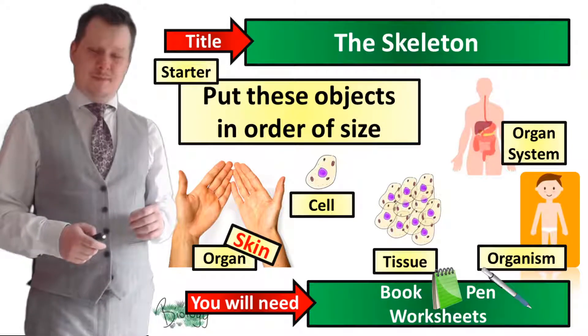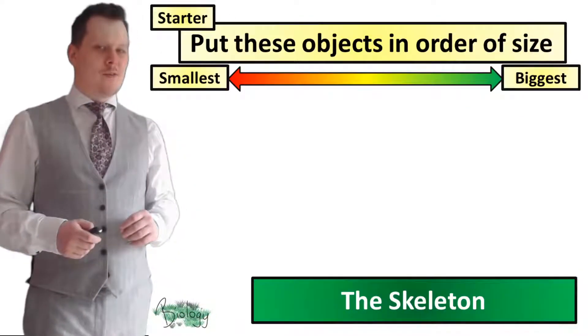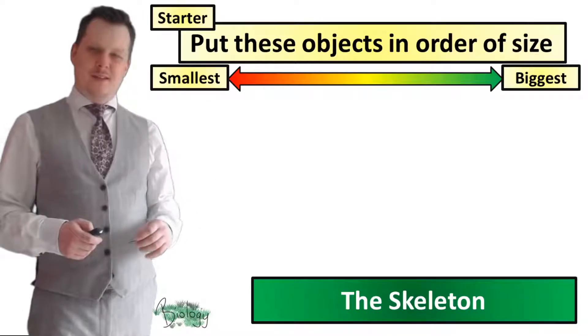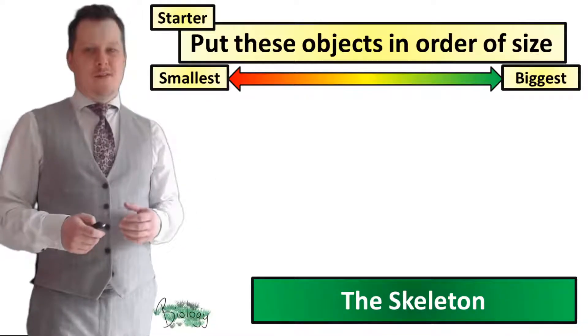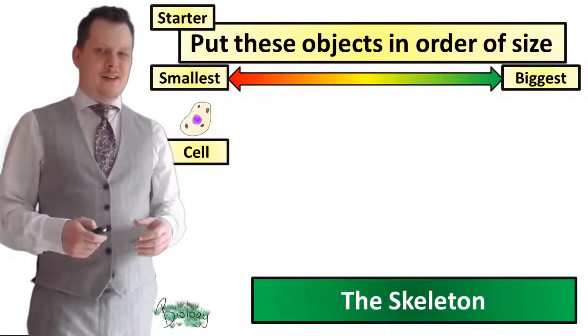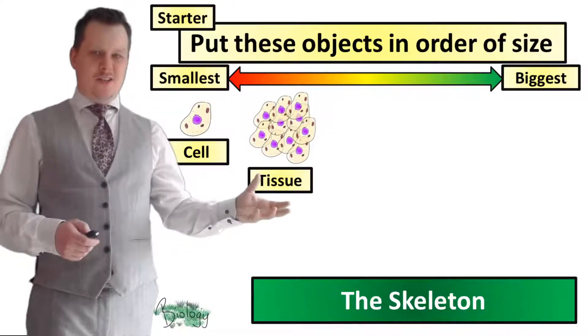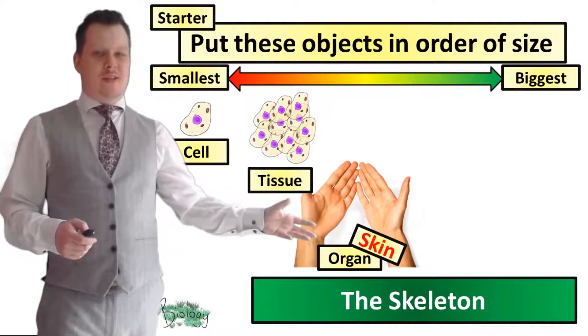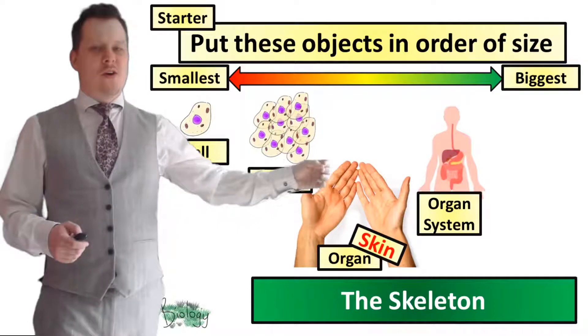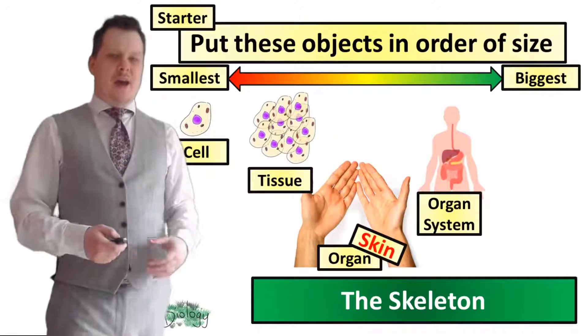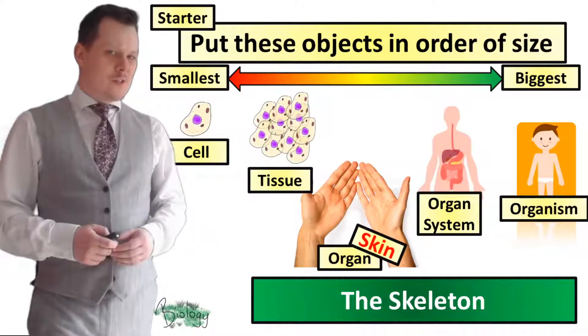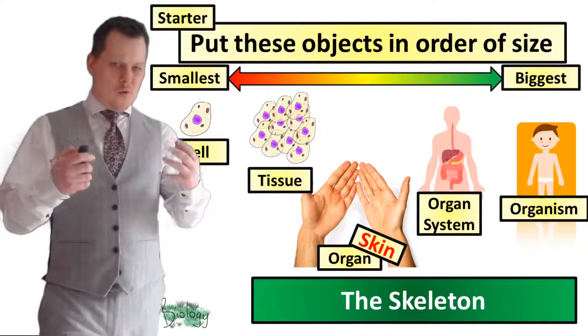Okay, you're all done? So putting these objects in order of size from smallest to biggest: the smallest unit of a living organism is the cell. A collection of cells is a tissue, a collection of tissues is an organ, a collection of organs is an organ system, and then a collection of organ systems is an organism, the whole living entity.